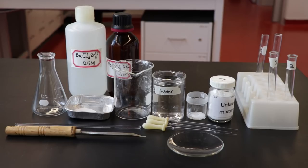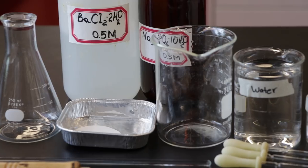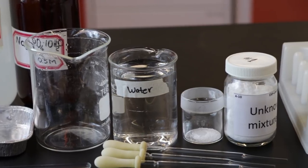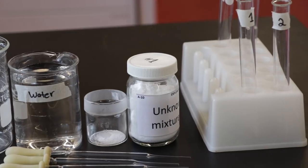First, obtain all the necessary equipment. The unknown mixture will be assigned by your TA. Use weighing by difference to obtain one gram of unknown mixture. A link to the video about weighing by difference is below.